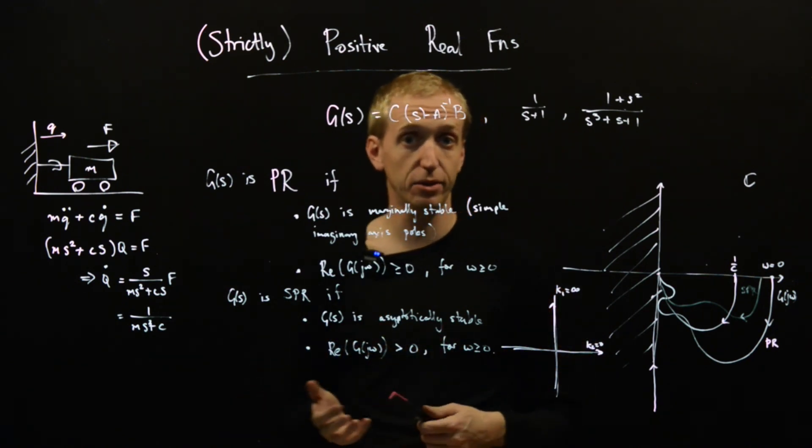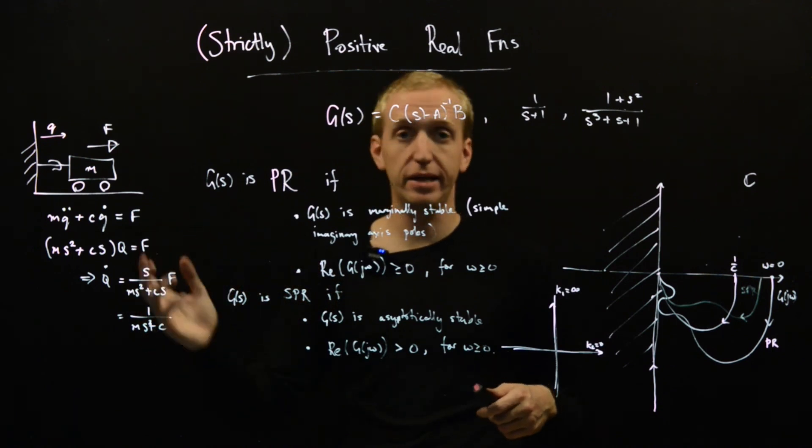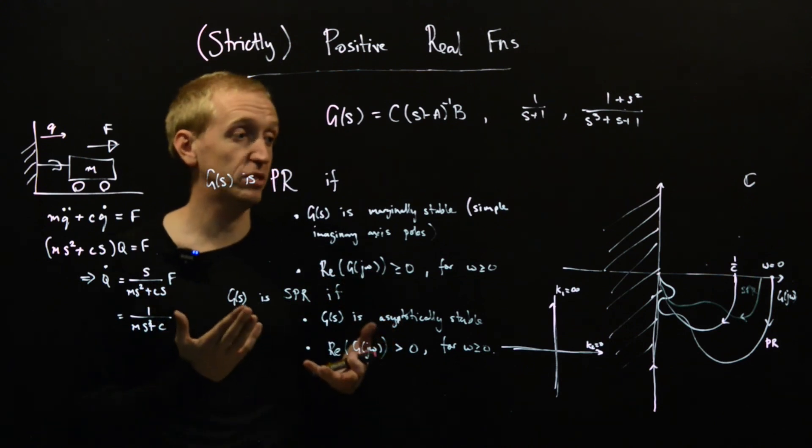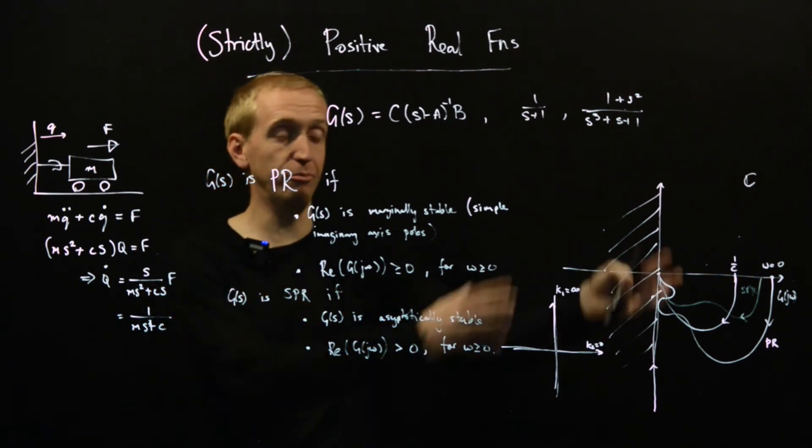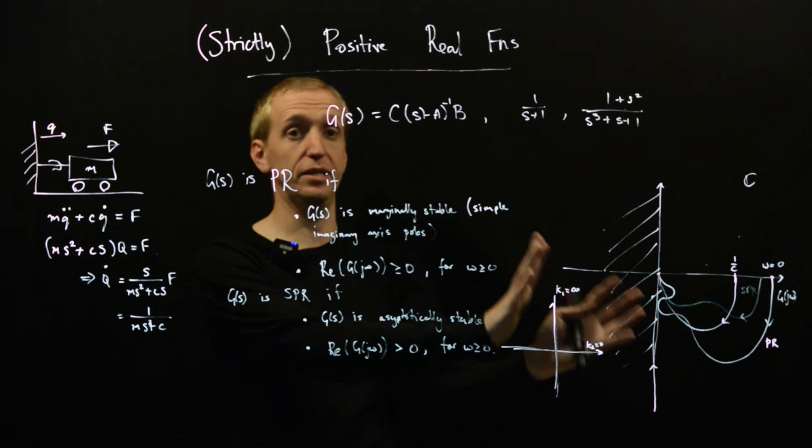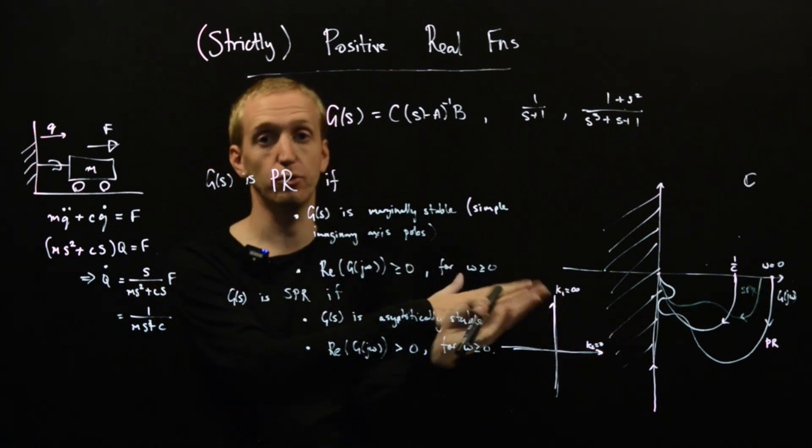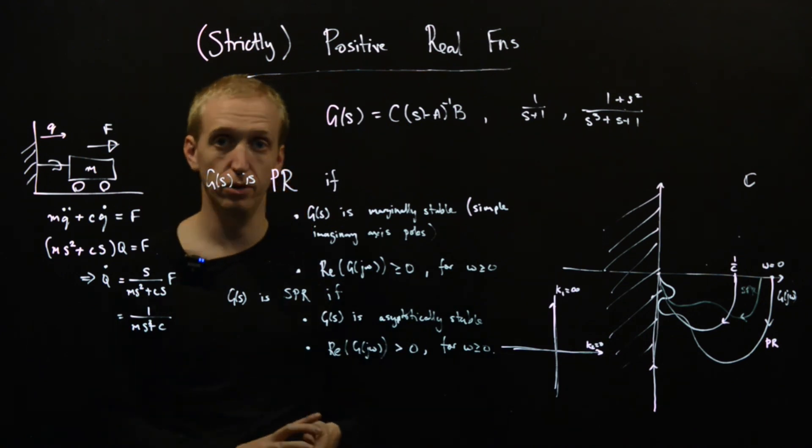Well, what we're now going to start to do is tie this notion of energy dissipation to these ideas of the Lyapunov functions that we saw before, and then work out how to manipulate this picture in order to transform this into the more general version of the circle criterion that we saw, and we could have different values of the slope.